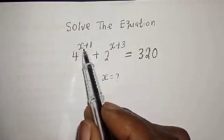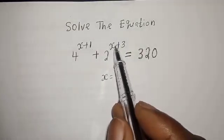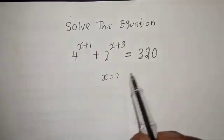Solve the equation: 4 raised to power x plus 1, plus 2 raised to power x plus 3, is equal to 320.